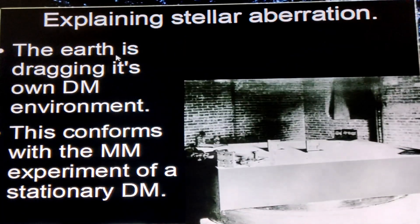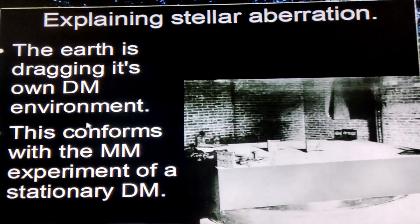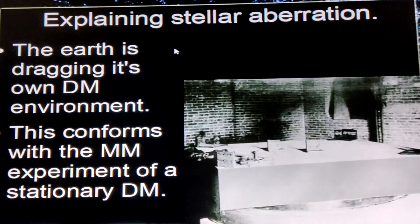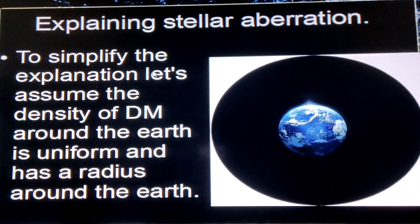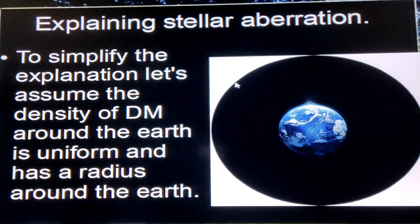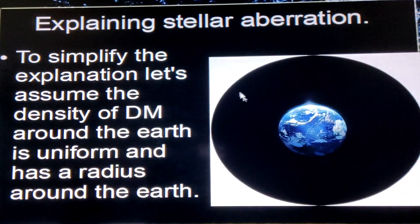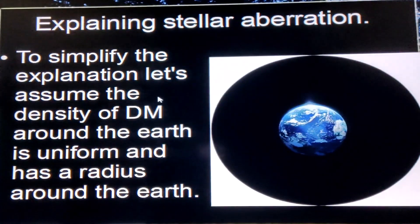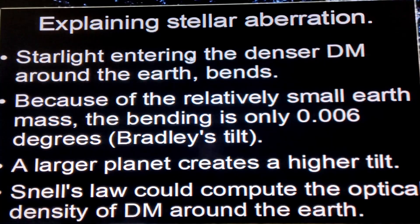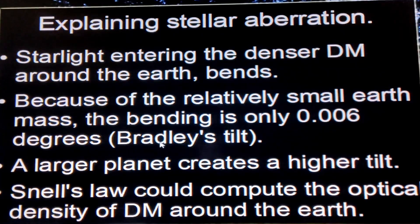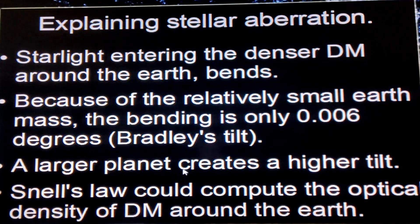The earth is dragging its own share of dark matter, and that explains why the Michelson-Morley experiment gave a null result. To simplify: say the earth is at the center of its dark matter region, which has a defined radius where it is most concentrated — outside that, the density is very low. Starlight entering the denser dark matter around the earth has to bend, and because of the relatively small earth mass, that bending is only 0.006 degrees, which matches Bradley's tilt.